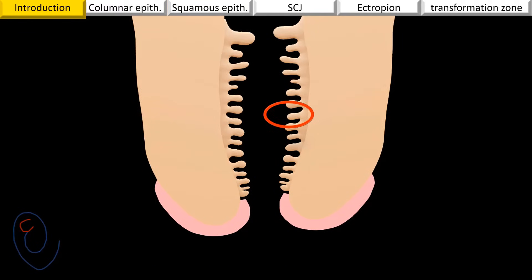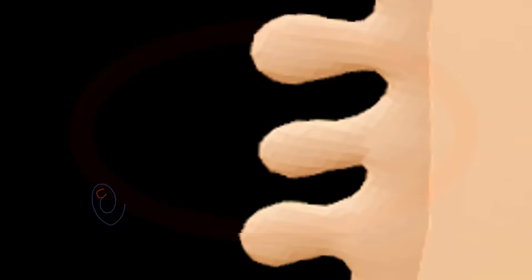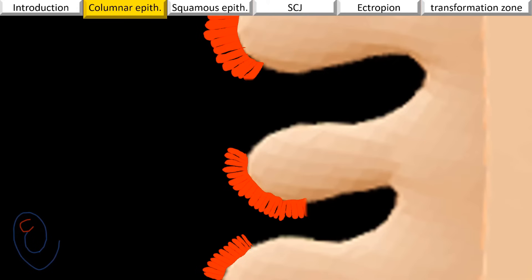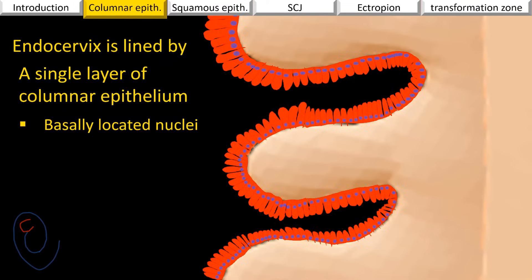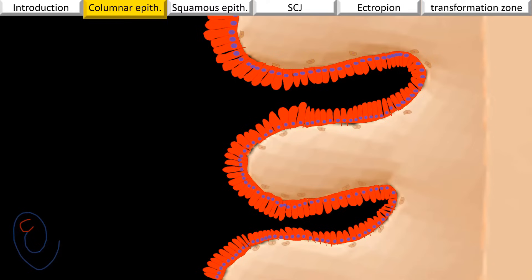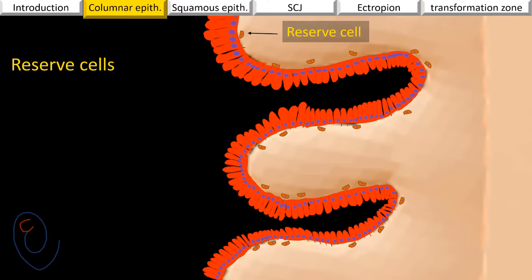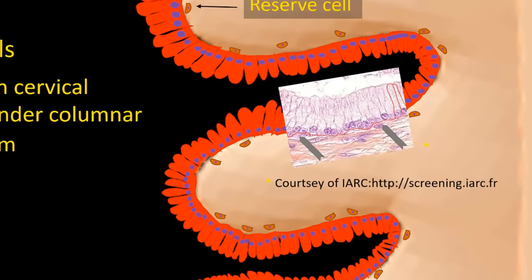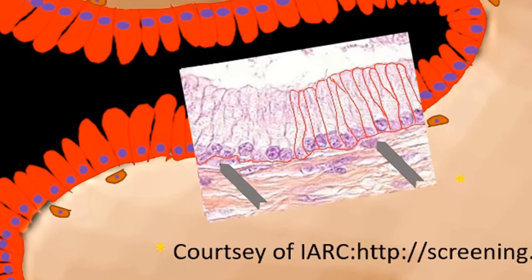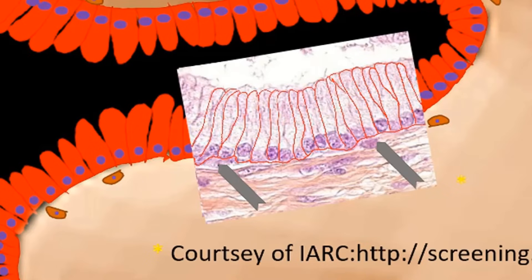Now let's examine the epithelial lining of the endocervix. The endocervix is lined by a single layer of columnar cells. These columnar cells contain basally located nuclei. There is also a less clear layer of cells called reserve cells, which are present under the columnar epithelium inside the cervical stroma. Here is a histologic picture of the endocervix where you can see the single layer of columnar cells with basally located nuclei, and two arrows pointing toward reserve cells.